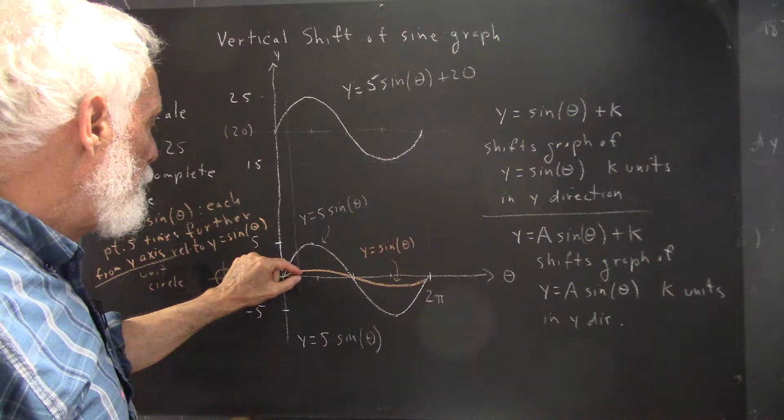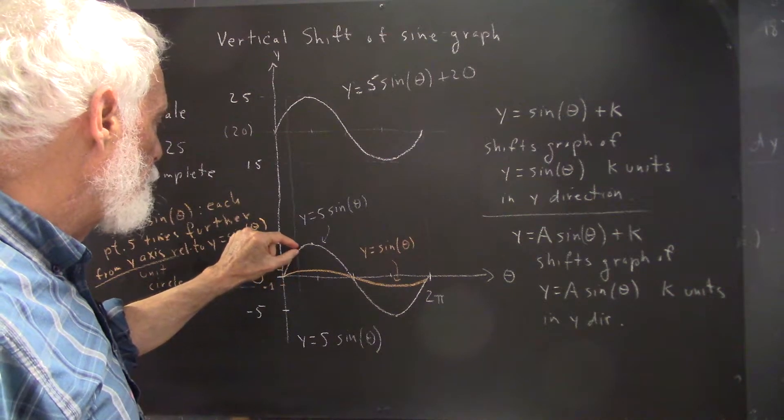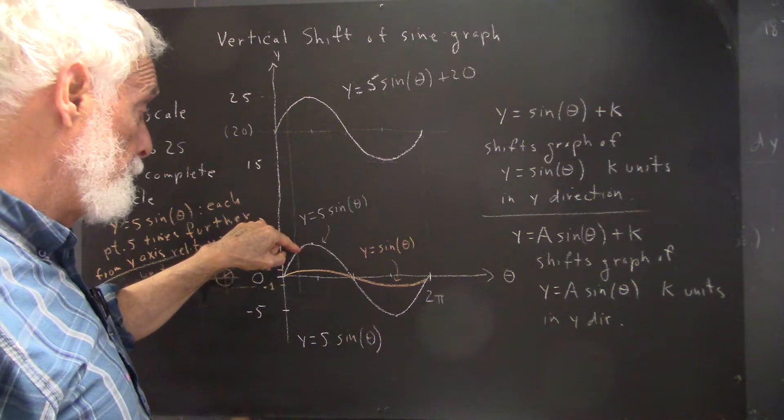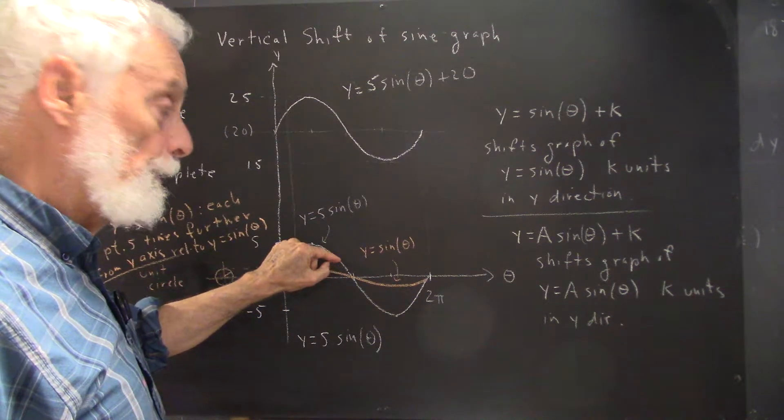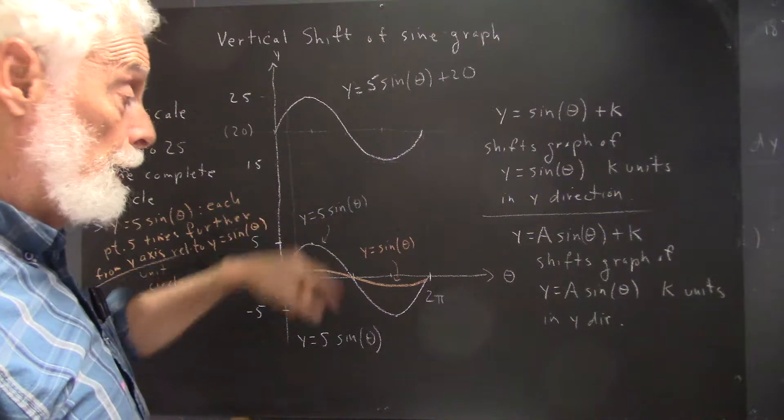This point, we have to take it five times further from the y-axis to get this point. This point here, we have to take it five times further from the y-axis to get the point lying directly above it.